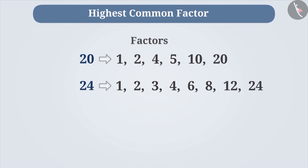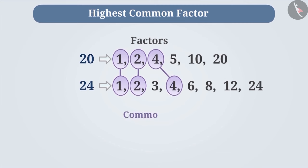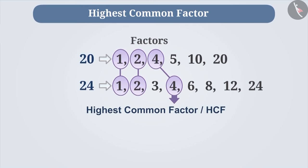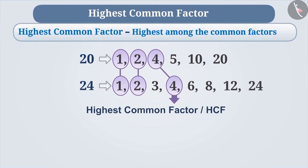Among the factors of 20 and 24, the factors 1, 2 and 4 are common. We call them common factors of 20 and 24. 4 is the highest number among the common factors of 20 and 24. Therefore, 4 is called the highest common factor. That means, for any 2 or more given numbers, the highest of their common factors is called the highest common factor or HCF.